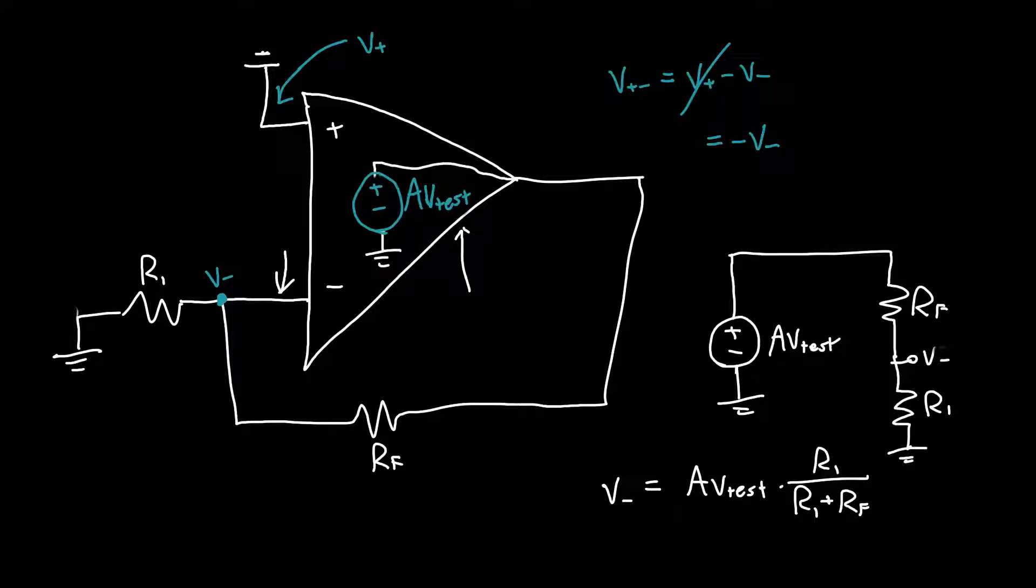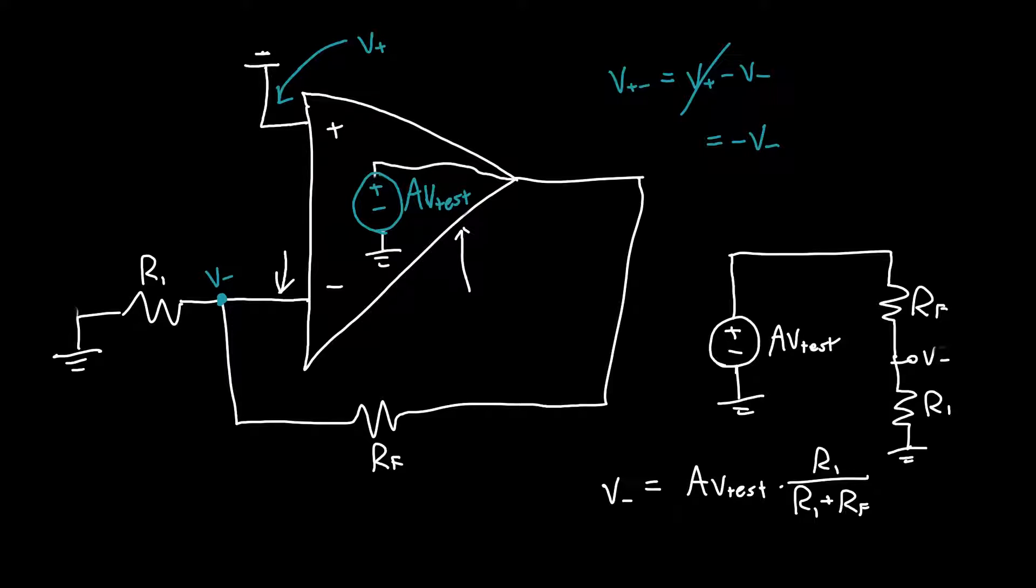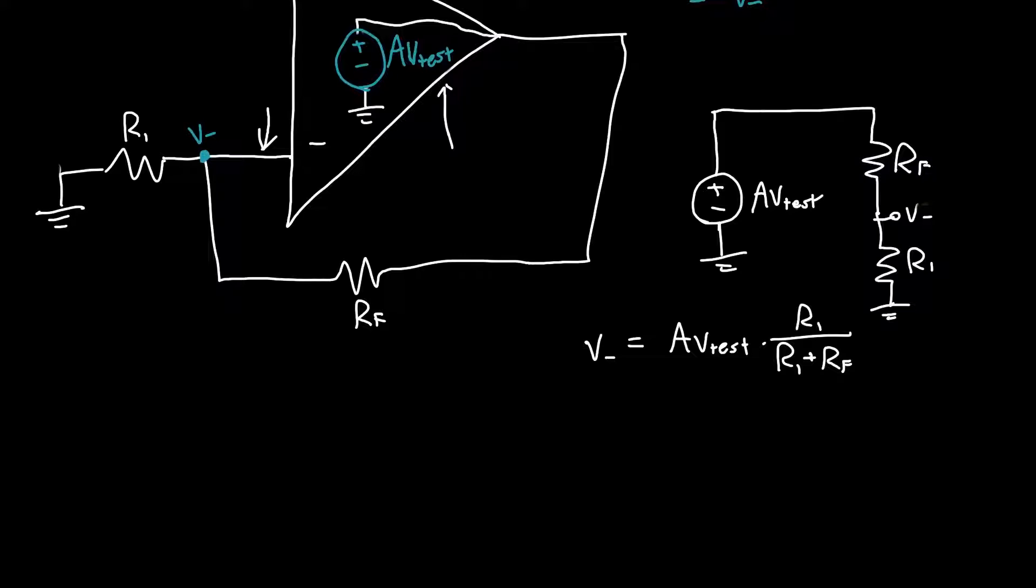Now what's the return ratio? The return ratio, just as with the transistors, instead of VGS, it's V plus minus. Minus V plus minus over V test. The minus is just here so that we can get a positive number for our return ratio.